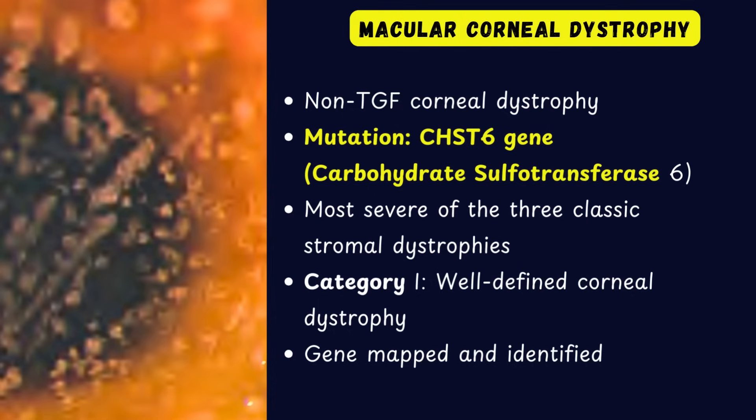Macular corneal dystrophy falls under category 1 of the corneal dystrophy classification, meaning that the gene has been mapped and identified. The mutation here is not in the transforming growth factor beta gene; instead it is in the CHST6 gene which encodes for carbohydrate sulfotransferase.